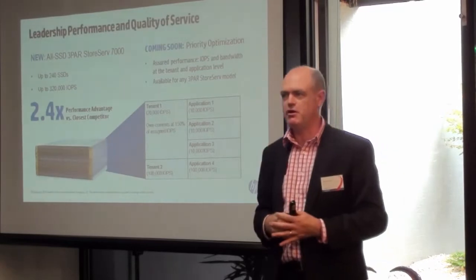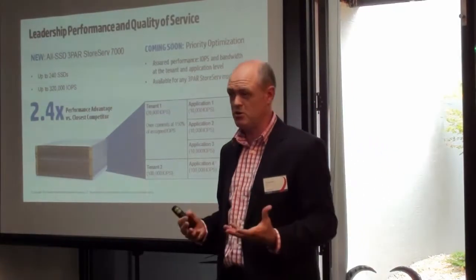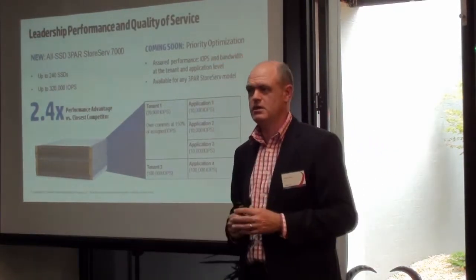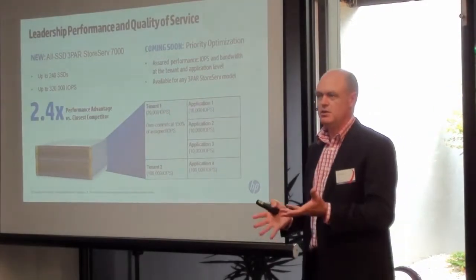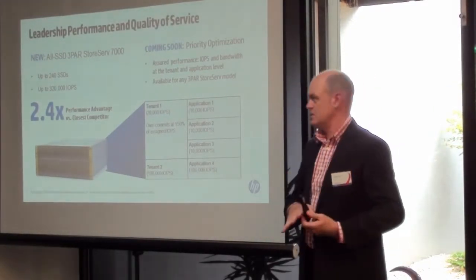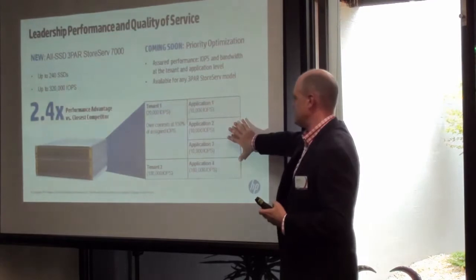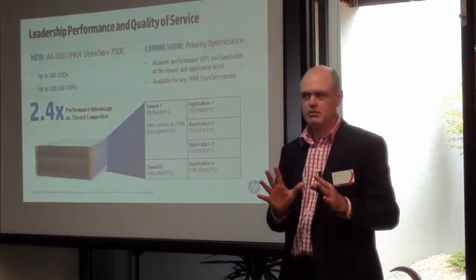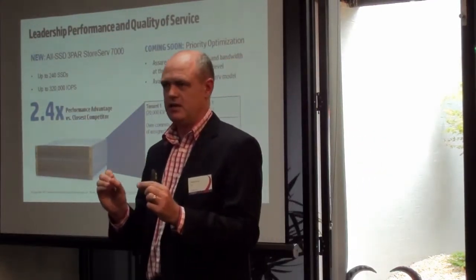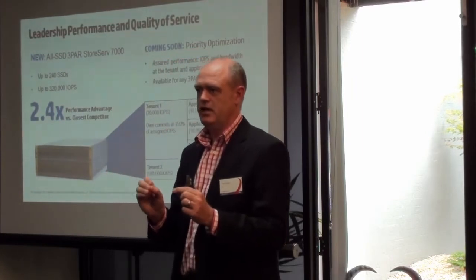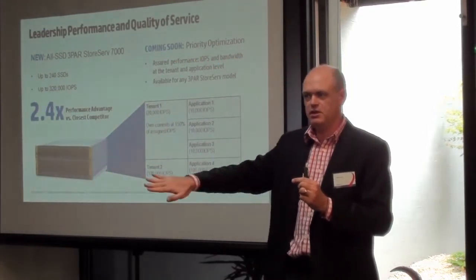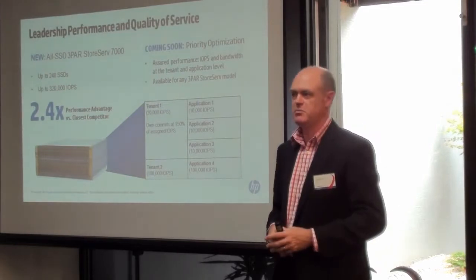This new feature we've got is called Priority Optimization. Some people call it QUAS, but QUAS is normally dealing with a solution or problem for old architectures. This is more about saying: I've got some high-tier applications, I want them to have x millisecond response to host, and if something else starts hitting the 3PAR, don't let that interfere with it. This is absolute guaranteed protected space.